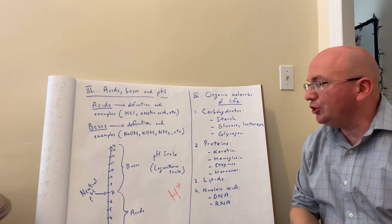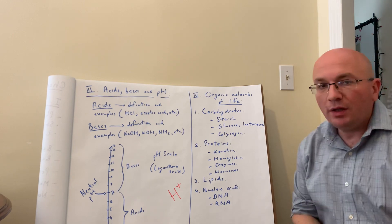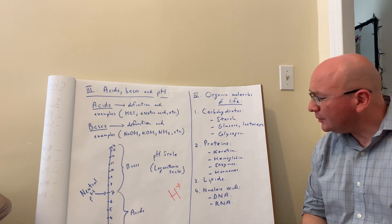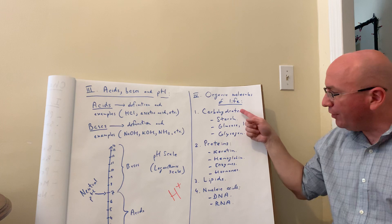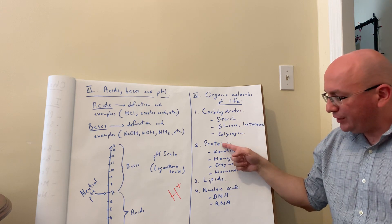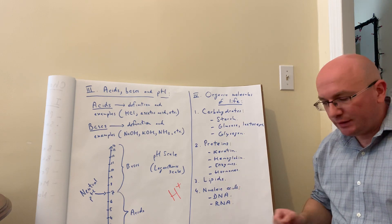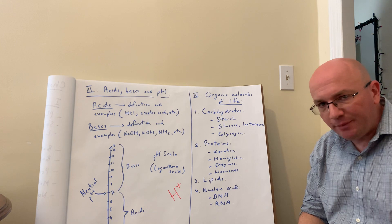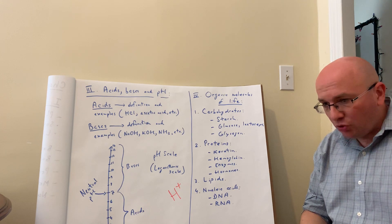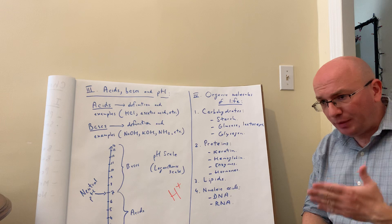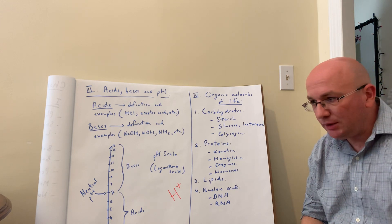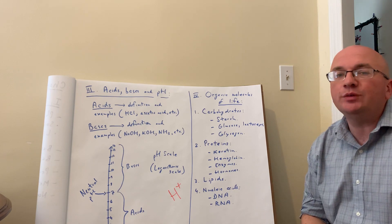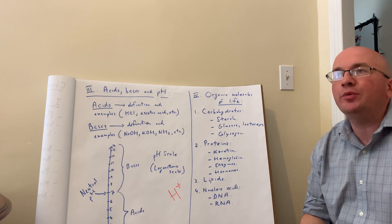The last part of this chapter covers molecules that will come back throughout the semester — the basic organic molecules of life. There are four main categories: carbohydrates, proteins, lipids, and nucleic acids. From a chemistry and biology point of view, we want to identify what kinds of examples of these molecules exist and how we're going to come across them in the body.